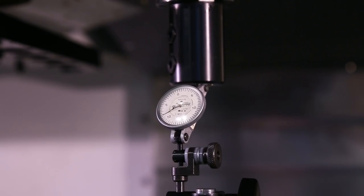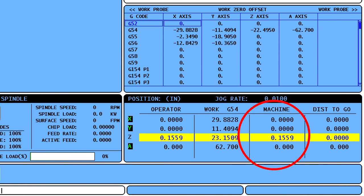Then jog the Z down until the tool holder touches the indicator, bringing it back to the same zero position. Record the machine's zero position value.